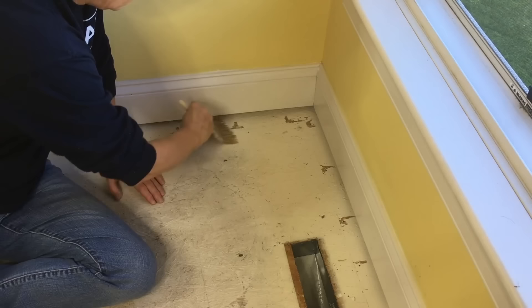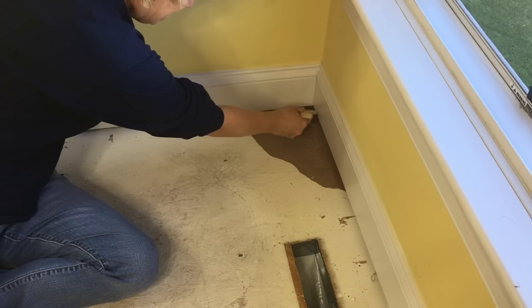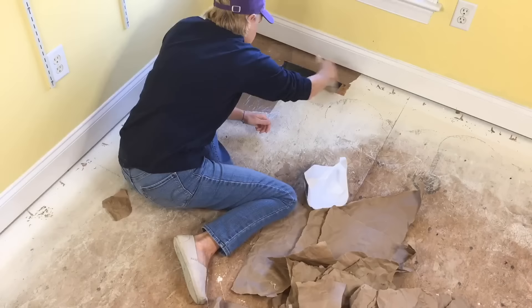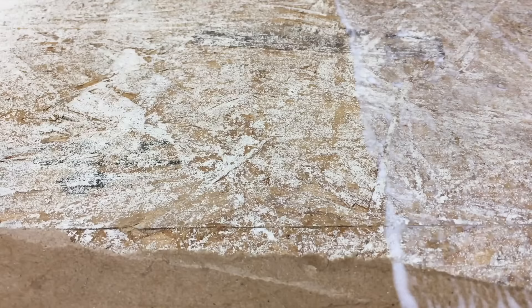Then I laid down the paper and brushed the glue on top. I continued to apply the glue to the floor, then the torn paper, and then more glue over top of the torn paper.